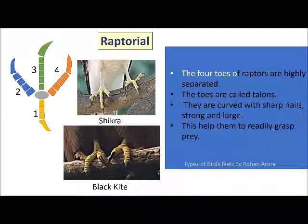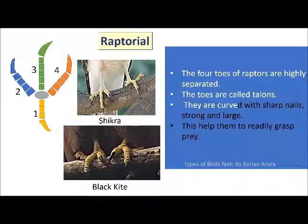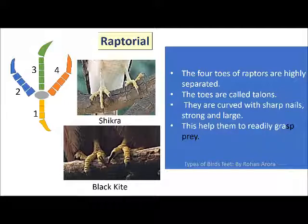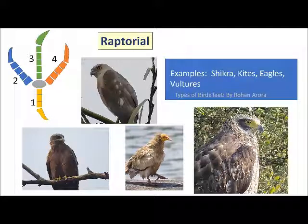The raptorial arrangement is found in raptors, in which all four toes are highly separated. The toes are called talons — they are curved with sharp nails, strong and large. This helps them to easily grasp prey. Shikras, kites, eagles and vultures have a raptorial arrangement.